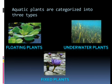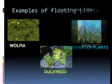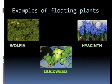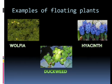Examples of floating plants: wolfia, duckweed, and hyacinth are examples of free floating plants. As these plants are not fixed to the soil, they have small and light bodies that can float. They have spongy and air-filled stems, which makes them light enough to float easily.